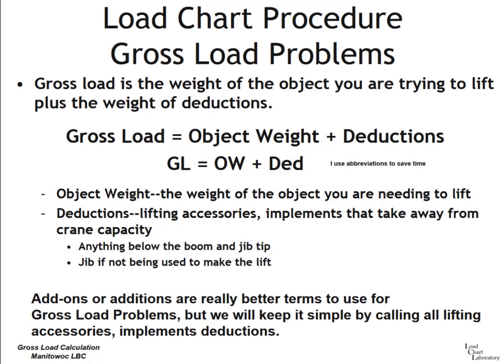A note on terminology: many crane experts use the term add-ons or additions instead of deductions when talking about gross load, which is really a better term. But to keep everything simple and consistent, if it's hanging below the boom tip or jib tip, we'll call its weight a deduction. Whether it's a net capacity problem or gross load problem, we'll use the term deductions throughout.